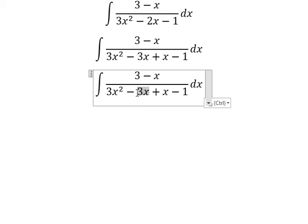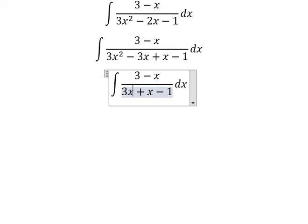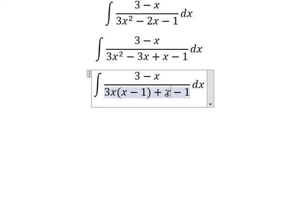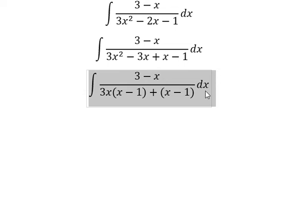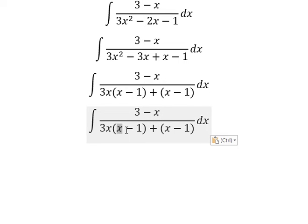For this one we can do factorization. We factor out 3x and get (x - 1). Next we can factor by (x - 1) to get the denominator as (3x + 1)(x - 1).